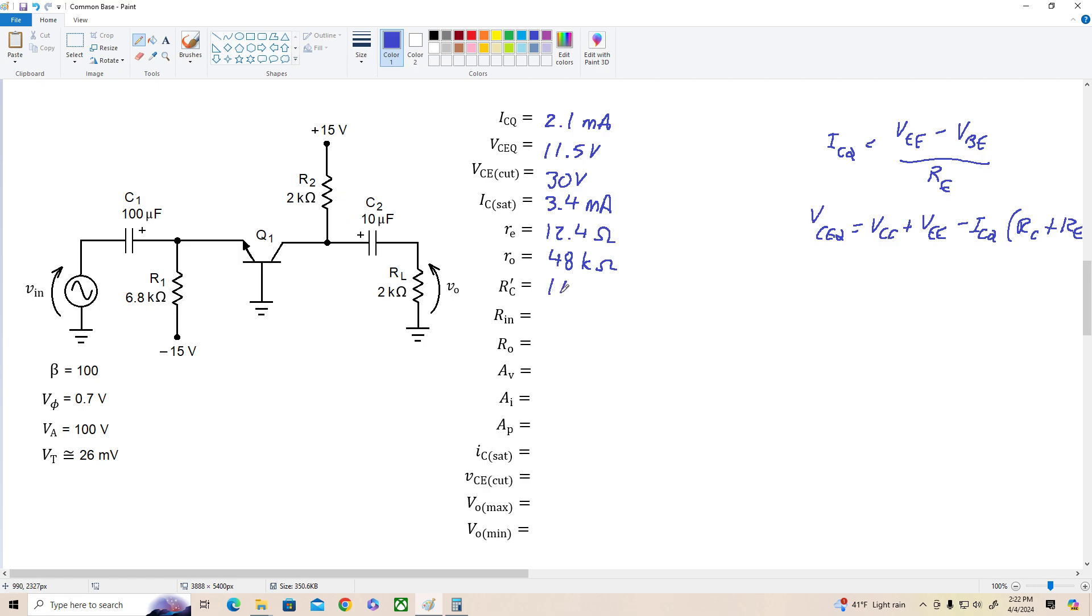R prime C is RC in parallel with RL. 2k in parallel with 2k is 1k ohm. The input resistance, R in is equal to RE in parallel with, in this case, just little RE, right? Because our external AC base resistance is 0.00. So that's 6800 in parallel with 12.4, which is approximately little RE. So we're going to have an input resistance of about 12.4 ohms. So that's one of the main characteristics of the common base amplifier is it's really low input resistance. That can be a problem sometimes, but let's go on. The output resistance is approximately equal to RC, 2k ohms. 2k in parallel with 48k is roughly 2k. So let's just go with RO of about 2k ohms.